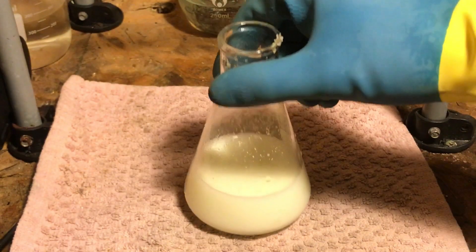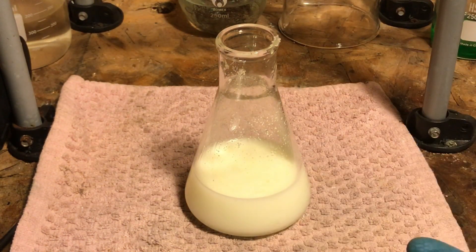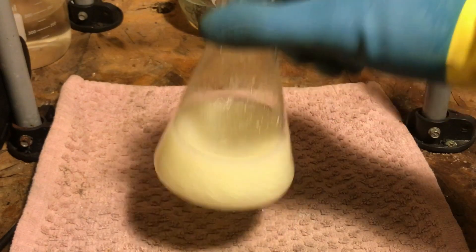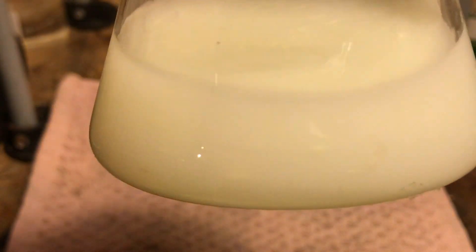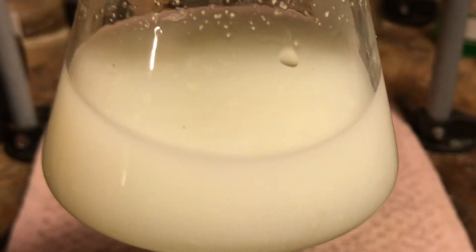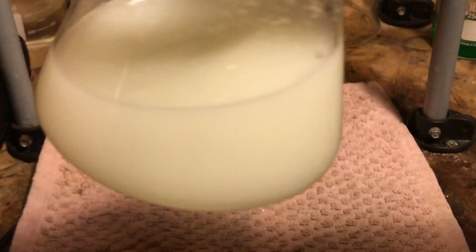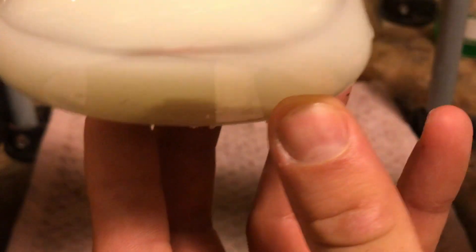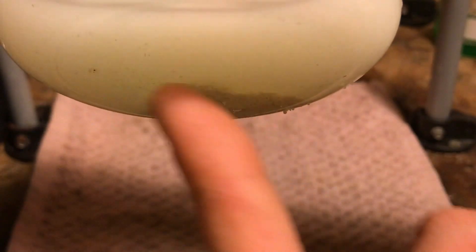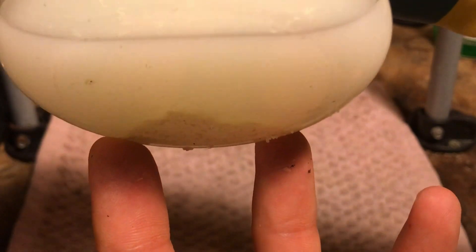I'm going to allow the solution to settle, allow all the precipitate to go to the bottom of the flask. As you can see, if you look very closely, you can see precipitate of the silver bromide in the flask. It should be near the bottom. What you're seeing here is the silver bromide precipitate.